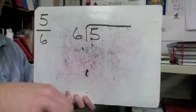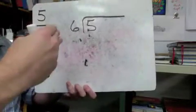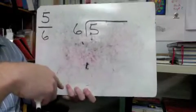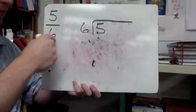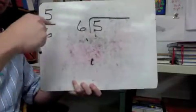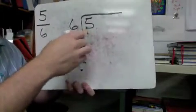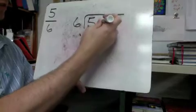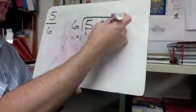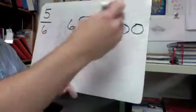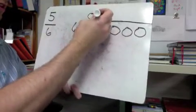Next we're doing five-sixths and changing that into a decimal. This one is going to be a little different — it's a terminating one. We want five divided by six, and we know it's going to be less than one whole because six can't go into five. I'll start with a point and a few zeros after it.